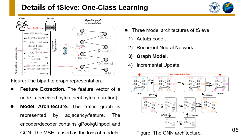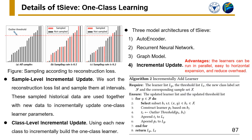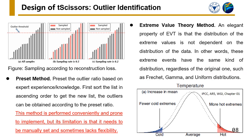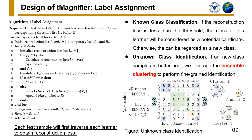Note that this structure can alleviate the influence of changes from content delivery. To adapt to new samples of known and emerging classes, we propose incremental update mechanisms at the sample and class levels respectively. The second component, scissors, is responsible for deploying the outlier detection algorithm to automatically determine the threshold for each one-class learner, including two ways: preset ratios and extreme value theory.